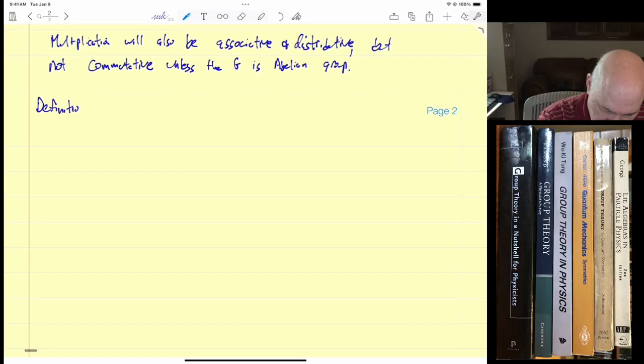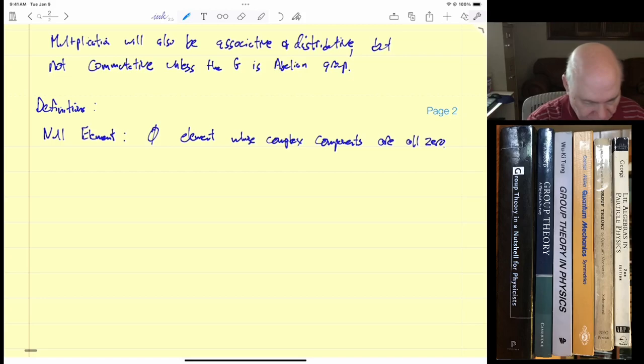Now I want to do a lot of definitions. So you'll just have to bear with me, but you have to become familiar with the language in this book. So let's start with a null element. And we denote it by phi, sort of like a zero with a line through it. So this is the element whose complex components are all zero. So this is just exactly what we expect here.